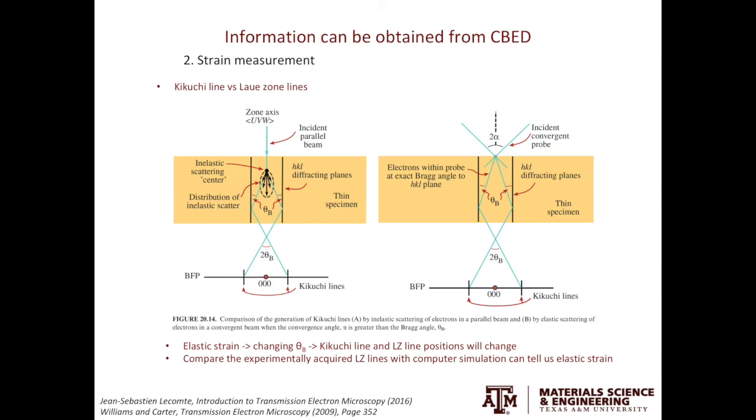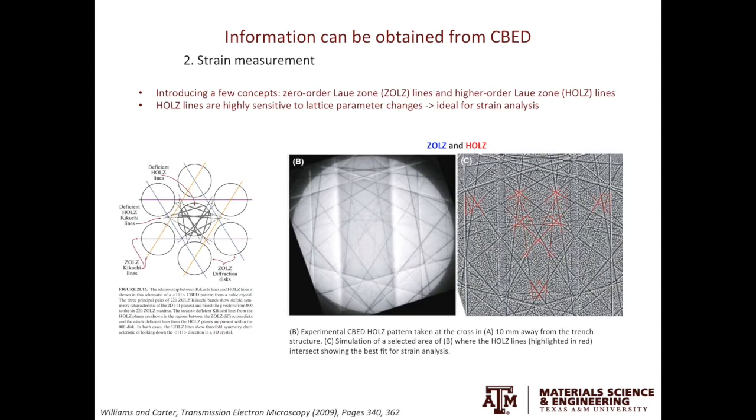When quantifying the strain, it's better to use the higher-order Laue zone lines rather than the zero-order Laue zone lines. Then, what are the higher-order Laue zone lines and what are the zero-order Laue zone lines? The zero-order Laue zone lines are very similar to the conventional Kikuchi lines. These are few examples. They go through multiple diffraction spots or diffraction disks.